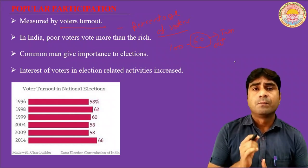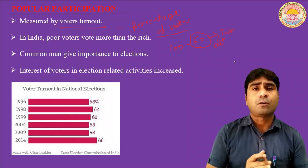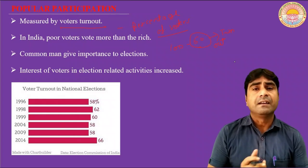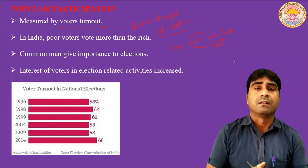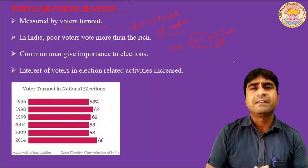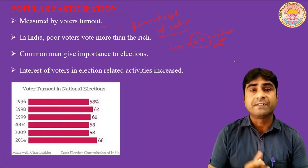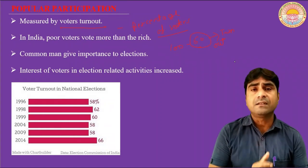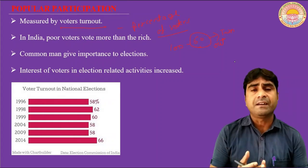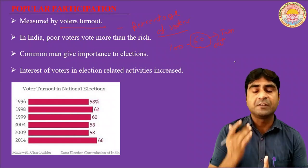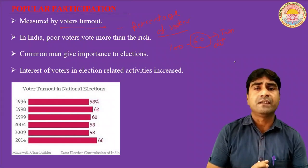One interesting point is that in India the common people and the poor people are participating in elections and taking more interest than rich people. The poor people poll their vote and take interest in the election more than the high class. This is because the poor and common people have faith and belief that their problems — education, electricity, employment — will be solved by the government. When they are unsatisfied with the present government, they take interest in elections to change their ruler, finding new government with new hope.